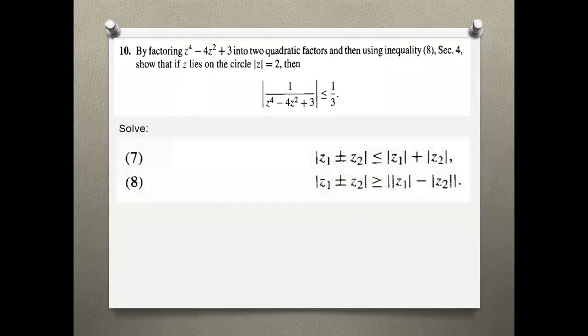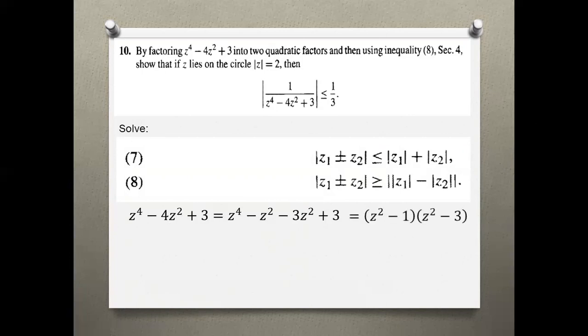In section 4, inequality 7 is the triangular inequality and inequality 8 we have to modify. Here we have the fourth root equation in this form. First we have to convert it to quadratic factors, so we have to apply factorization. We can apply the quadratic formula. Here we add 3, here we add 3, and we add 4 times 3 to 1. So multiply 3 and we add 3.